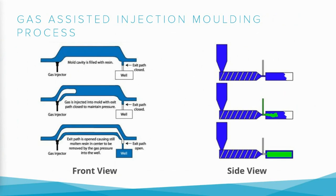In gas-assisted injection molding, there are three stages required to make the part hollow from inside. In the first stage, the mold is partially filled with a measured amount of molten plastic material — enough to maintain a wall thickness of 2 mm or 3 mm. In the second stage, inert gas is injected from one side; you can see the green color representing the inert gas injected into the mold cavity.